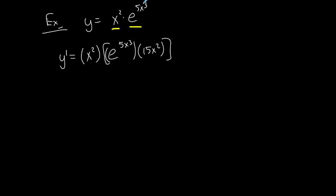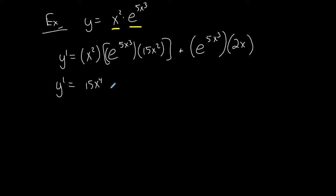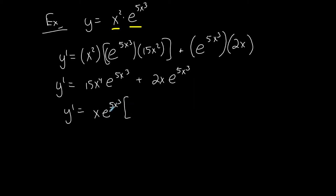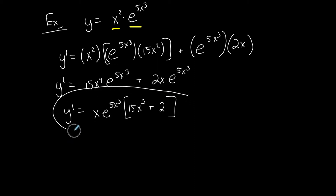Copy it down and multiply by the derivative of the exponent. So it's: first times the derivative of the second, plus the second times the derivative of the first — and the derivative of x squared is just 2x. Simplifying: x squared times 15x squared gives 15x to the fourth times e to the 5x cubed, plus 2x times e to the 5x cubed. We can factor out x and e to the 5x cubed as a GCF, leaving 15x cubed plus 2 inside the parentheses. This is the first derivative completely factored.